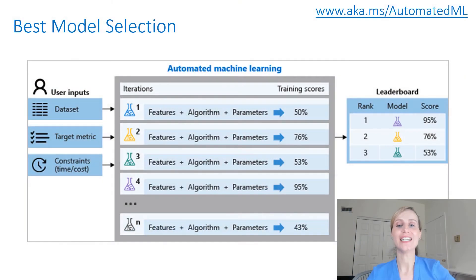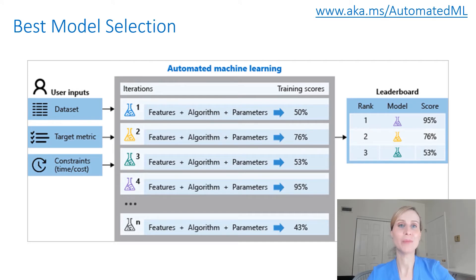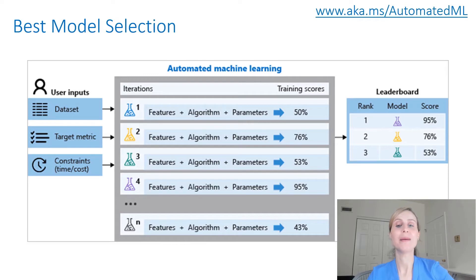Automated machine learning is the process of automating the time-consuming iterative tasks of machine learning model development. Automated machine learning takes uncertainty into account, incorporating the probabilistic model to determine the best pipeline for you to try next.